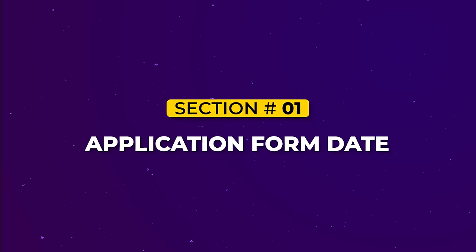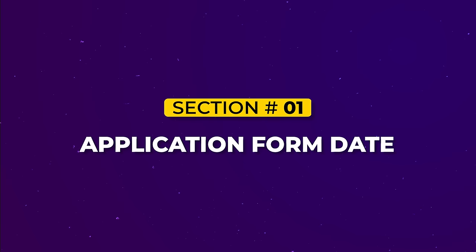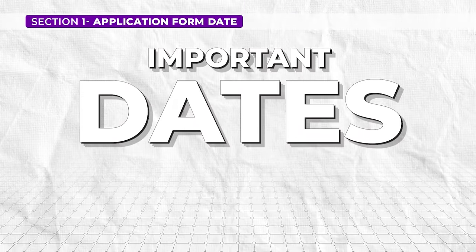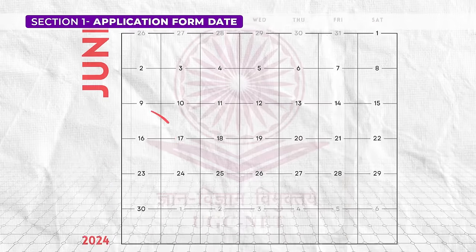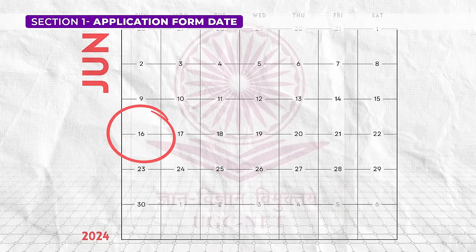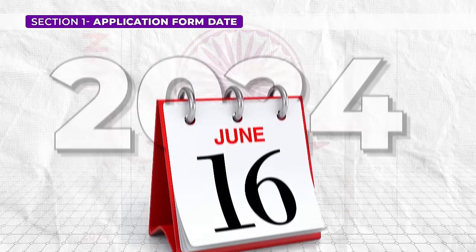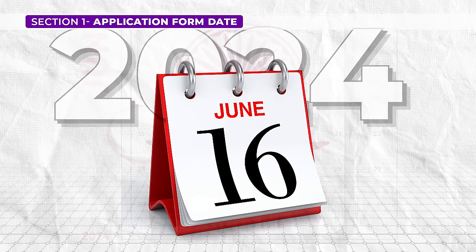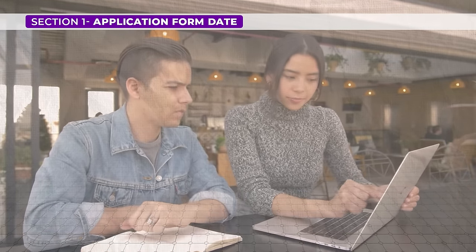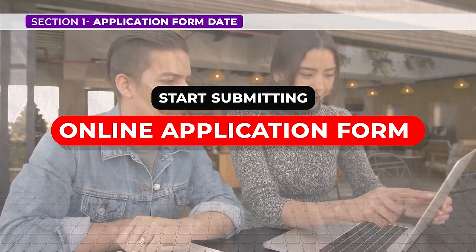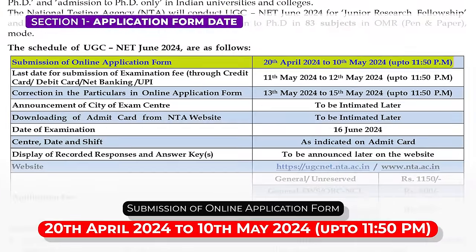Section 1: Application Form Dates. Before we jump into these sections, let us first discuss the important dates and schedule given by UGC for the upcoming examination. The UGC NET June 2024 examination is officially scheduled for June 16th, 2024 — mark that date down. If you're planning to appear for the exam, you can start submitting your online application from April 20th and submit it till 11:50 PM of May 10th, giving you close to 20 days to submit your application form.